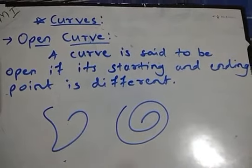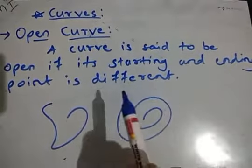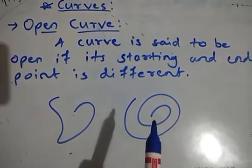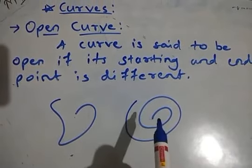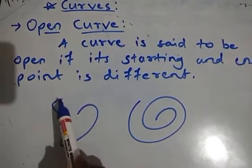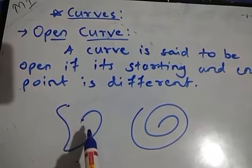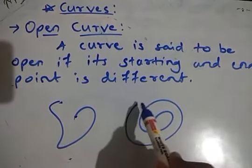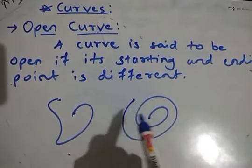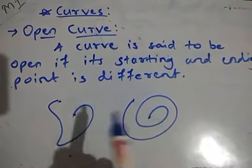Now let's study about open curve. A curve is said to be open if its starting and ending point is different. This one and this one are simple curves as well as open curves. Why? Because the starting point and ending point of these curves are different. As the starting point and ending point are different, we call these open curves.